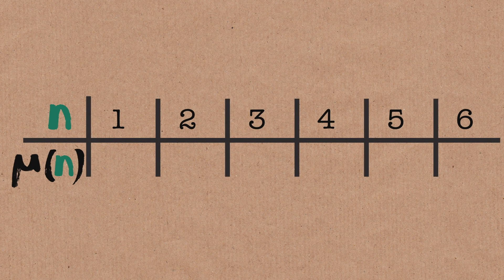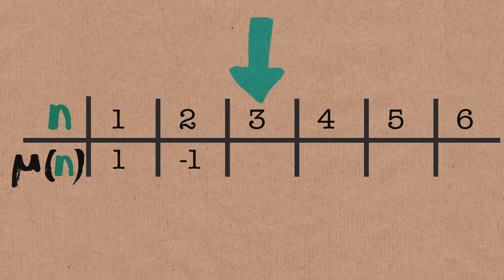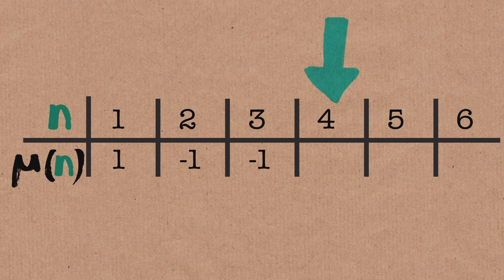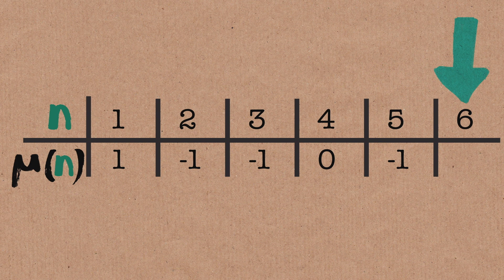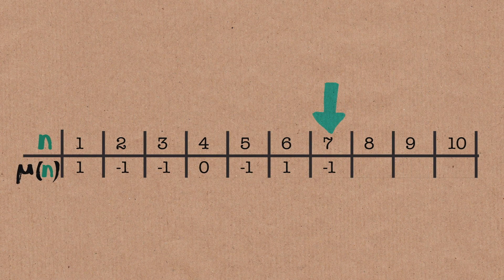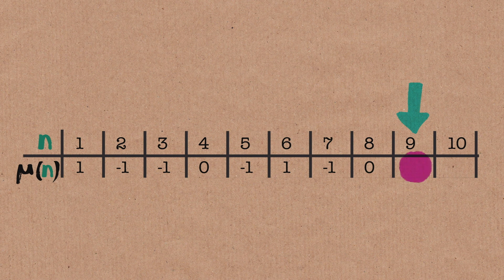Starting with 2: it's prime, one prime factor, that's odd, so we assign minus 1. Same for 3. Then 4 is 2 times 2 — a repeated prime factor — so we assign 0. 5 is prime, gets minus 1. 6 factors into 2 times 3, that's 2 prime factors, so we assign 1. 8 takes 0, 9 is a square so it takes 0, and 10 has 2 prime factors. And you can keep going.